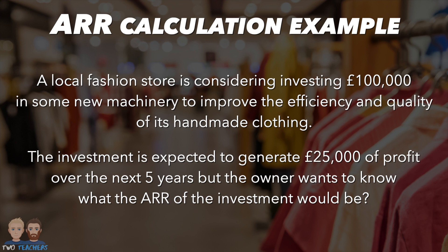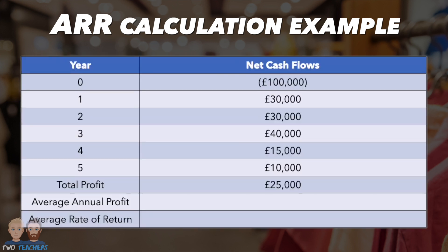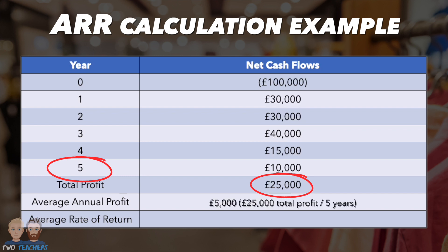So, the first step you need to take is to calculate the average annual profit. We know that the business is expecting to generate a total profit of £25,000 over the next five years. Simply divide this £25,000 of profit by the five years that it will be generated over and you will get an answer of £5,000. This is the average annual profit which the business expects to receive from the investment.